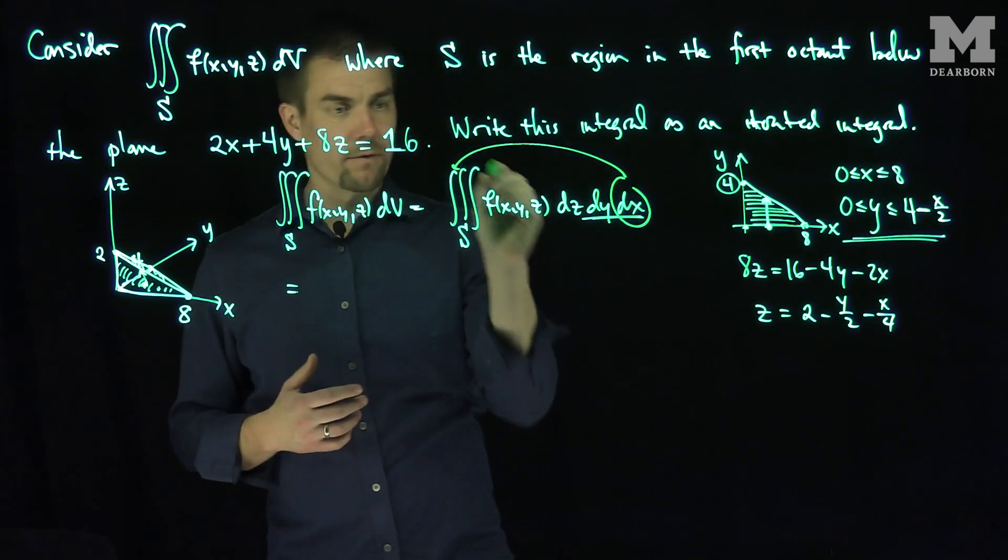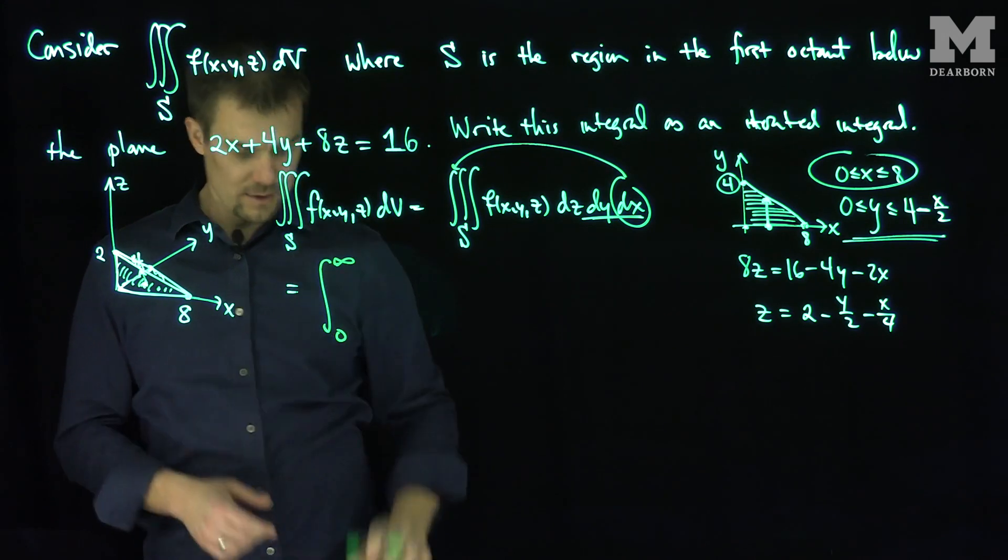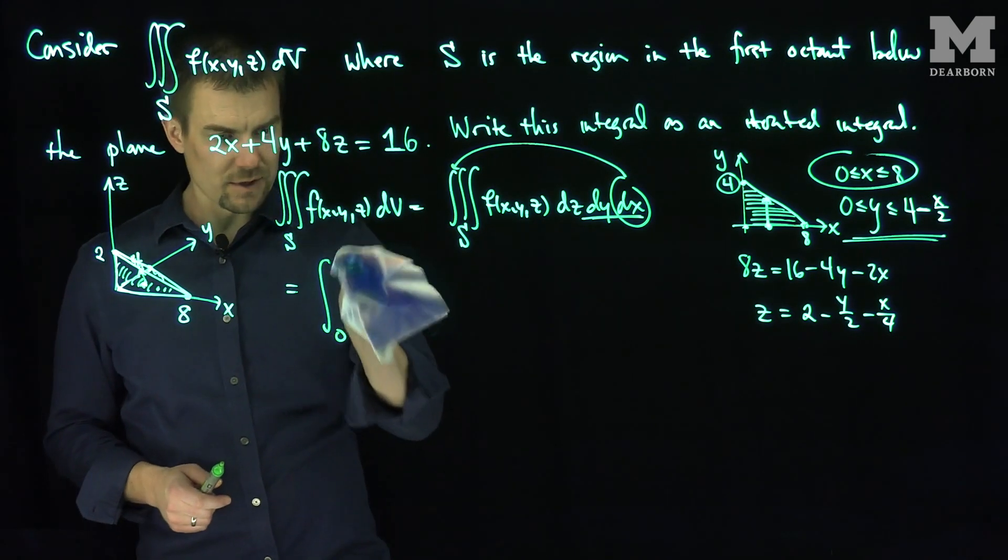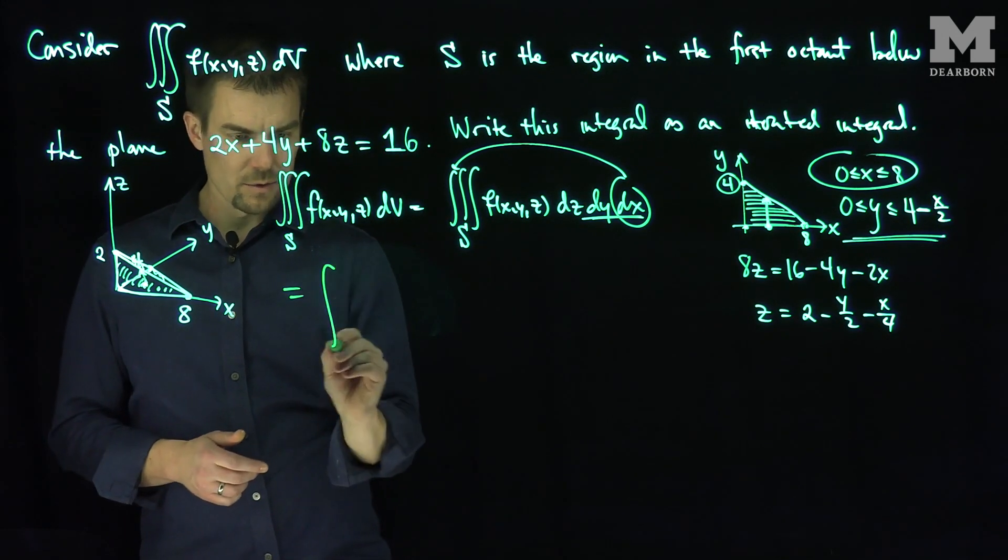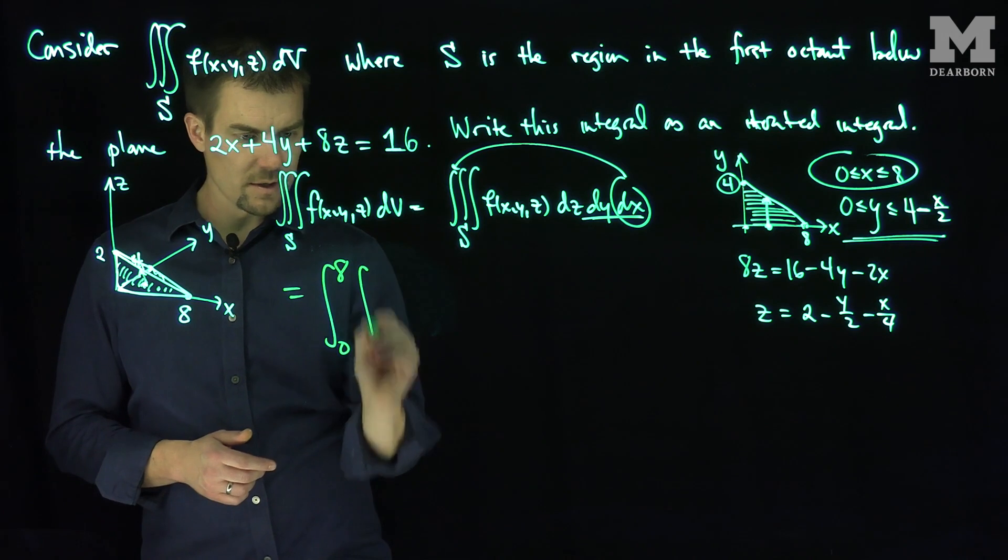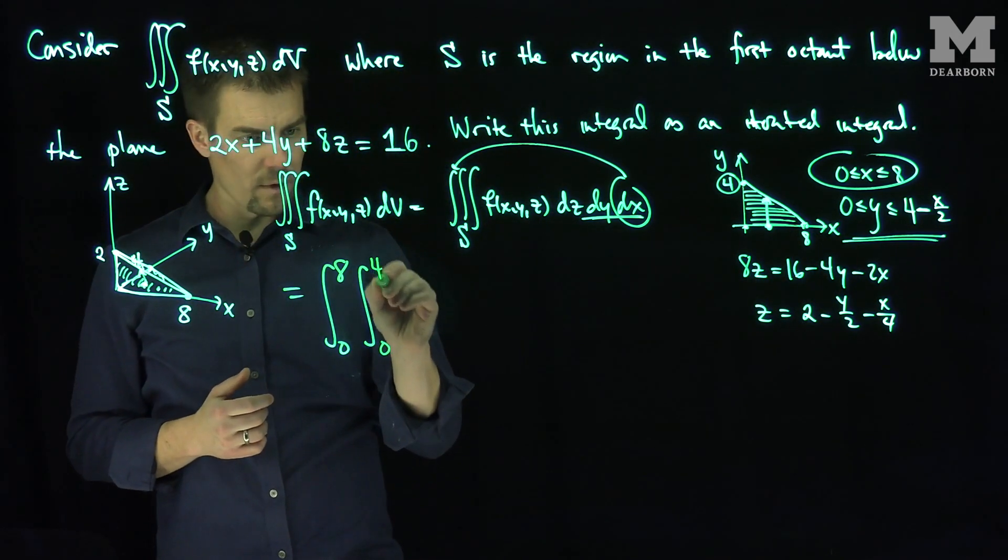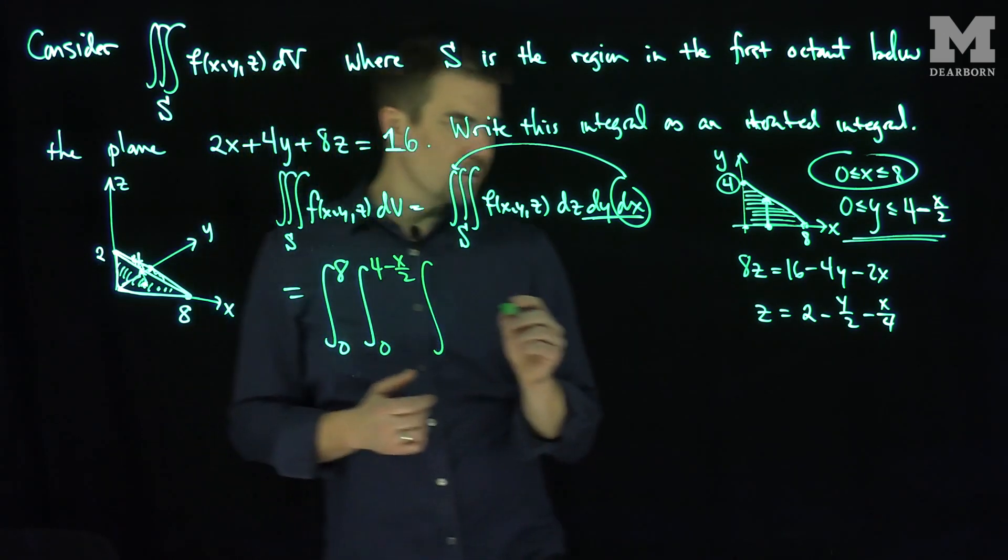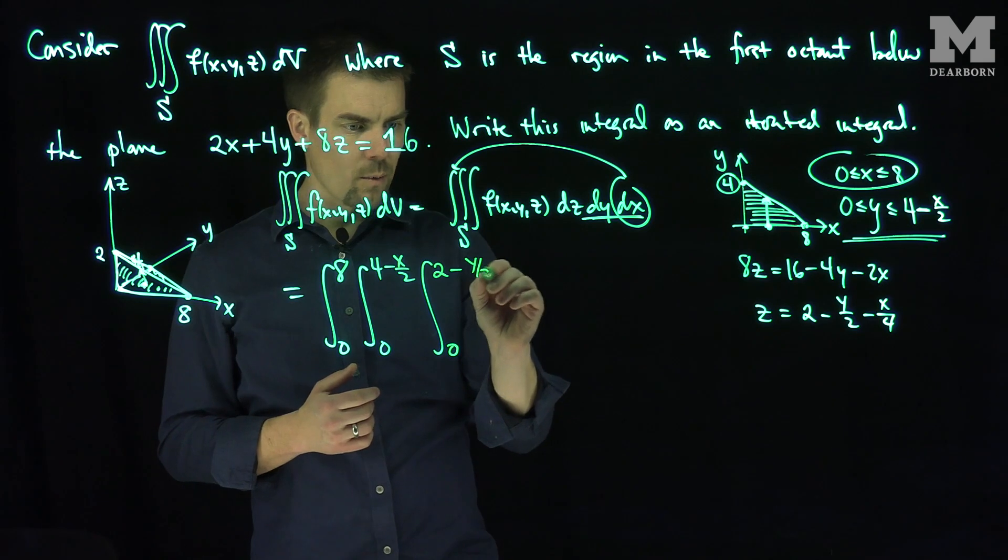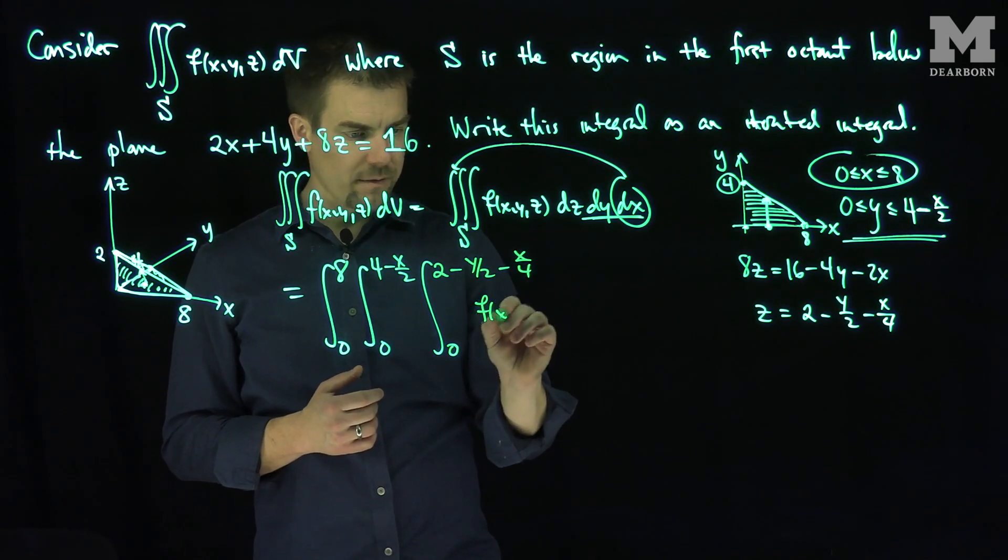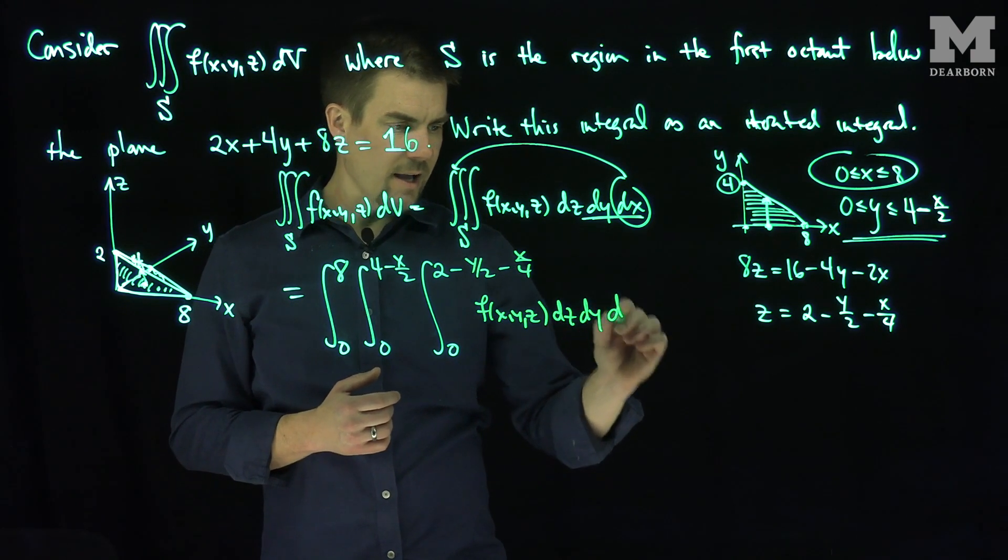So where does x go from? x is the very, very first integral we see. So x goes between 0 and 8. Between 0 and 8 for x. Not 0 and infinity, but 0 and 8 for x. So let's do that. So we have x goes between 0 and 8. Then what does y go between? y goes between 0 and 4 minus x over 2. and then z goes between 0 and 2 minus y over 2 minus x over 4. f of x, y, z, dz, dy, dx.